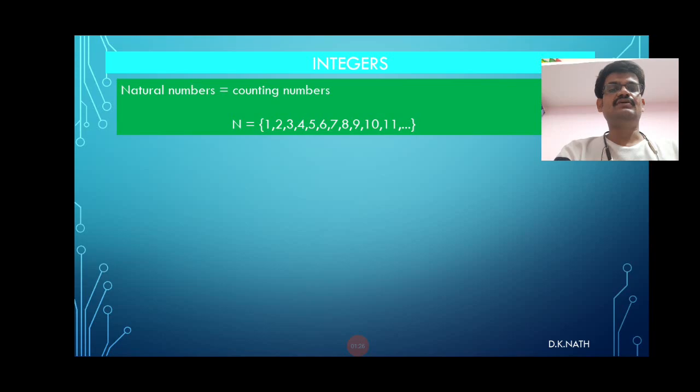Natural numbers are also known as counting numbers, denoted by N: 1, 2, 3, 4, 5, 6, 7, 8, 9, 10 and so on.